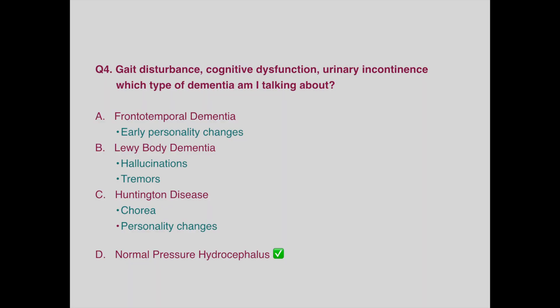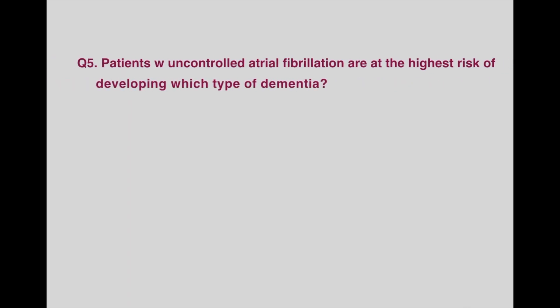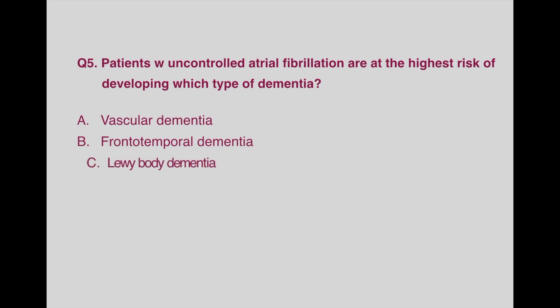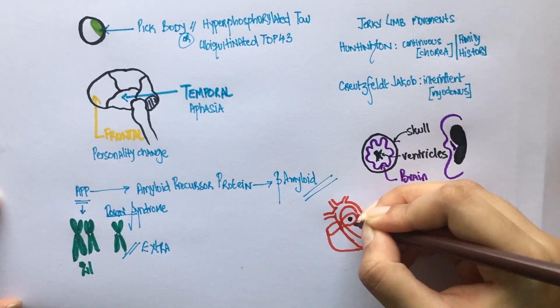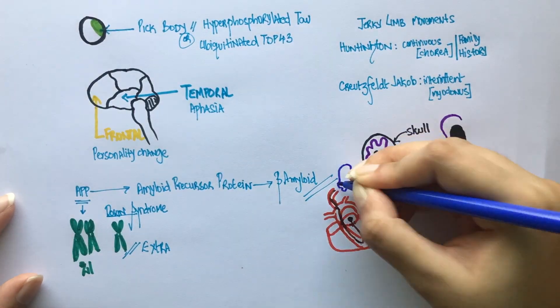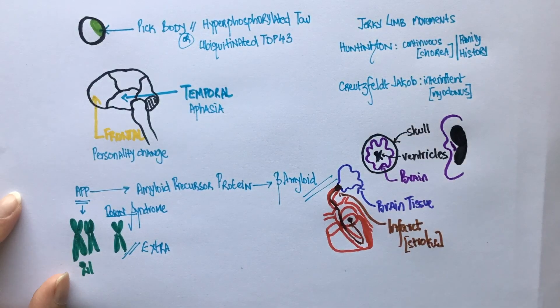Question number 5. Patients with uncontrolled atrial fibrillation are at a higher risk of developing which type of dementia? Option A, vascular dementia. Option B, frontotemporal dementia. Option C, Lewy body dementia. Vascular dementia is a result of multiple strokes. Patients with atrial fibrillation are predisposed to strokes due to embolization from the left atrium. Since the left atrium doesn't beat properly, the blood pools in this chamber of the heart. Eventually, this leads to the formation of clots which travel through the left ventricle, aorta, carotids, and finally reach the brain. The clot will disrupt the blood supply to the brain tissues, resulting in a stroke. Multiple similar incidents could lead to vascular dementia.